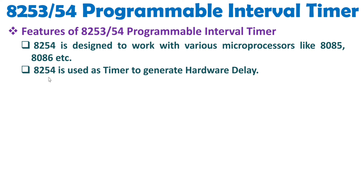You should know the basic difference between hardware delay and software delay. Hardware delay means a delay generated by a peripheral IC — like this 8254 IC that we will be interfacing with the main microprocessor, which may be 8085 or 8086. Software delay means delay generated by writing and executing a program. Like in my 8085 lecture series videos, I explained how to generate delay by executing instructions — those delays were software delays.